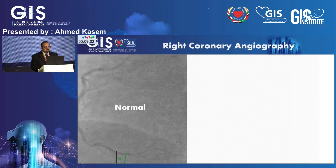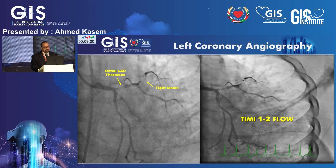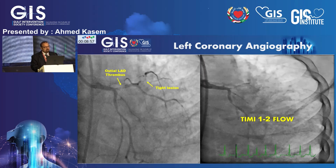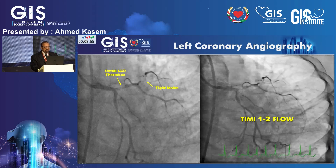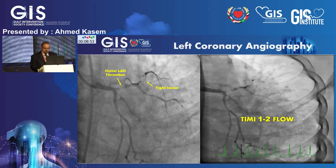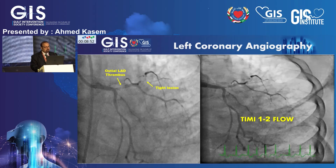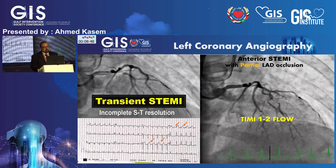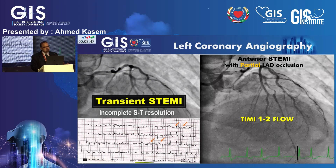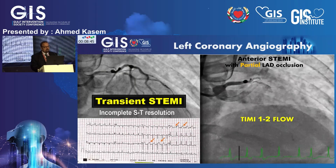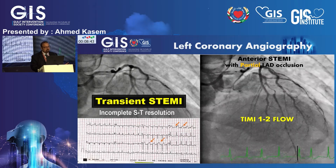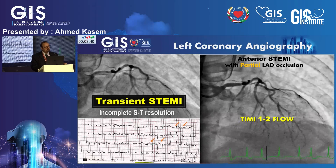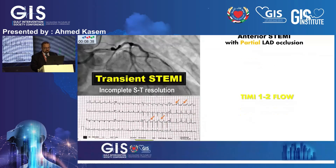RCA showed no significant lesion. The left system showed a tight ostial LAD and tight mid-segment LAD, but with a moderate burden of thrombus — grade 2 thrombus burden — with partial recanalization. There was no total occlusion. This is what we call a transient ST-segment elevation myocardial infarction, but with incomplete resolution of the ST-segment.